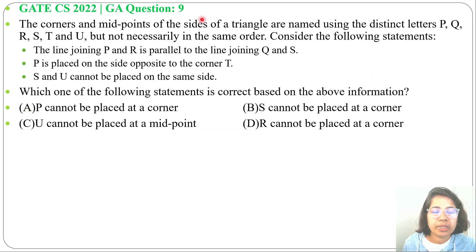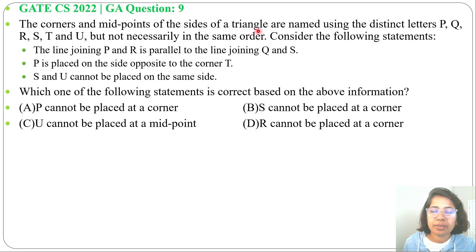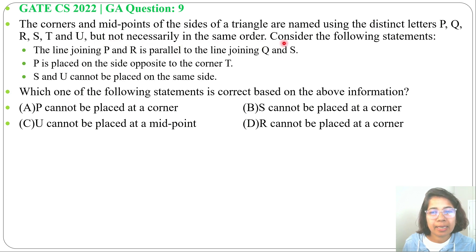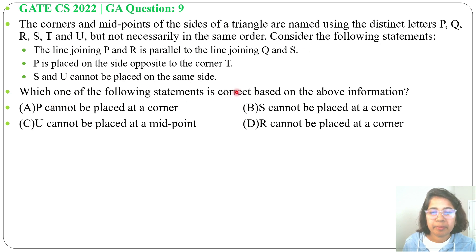Let's look at a previous question on general aptitude. This question was asked in GATE CS 2022, GA question number 9. The corners and midpoints of the sides of a triangle are named using the distinct letters P, Q, R, S, T, and U, but not necessarily in the same order. Consider the following three statements. Which one of the following statements is correct based on the given information? Four options are given.